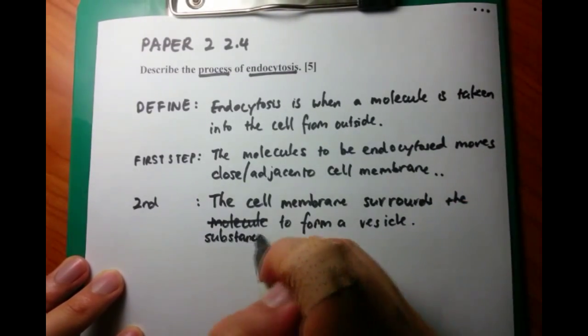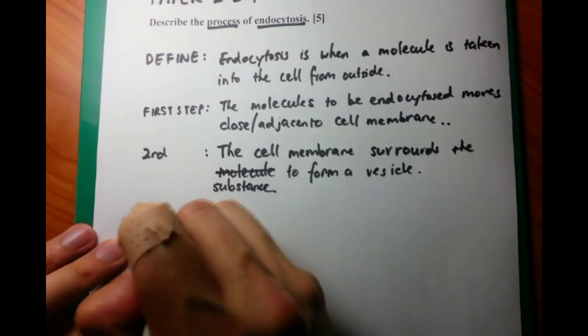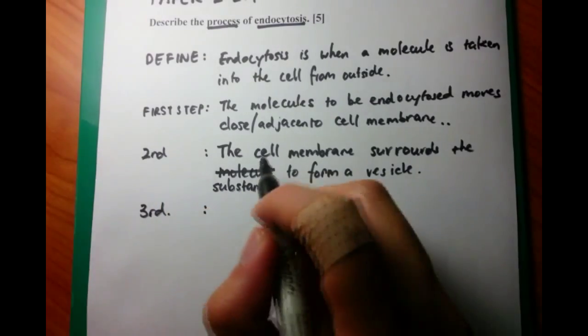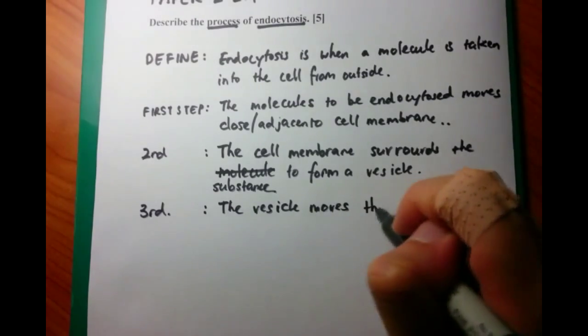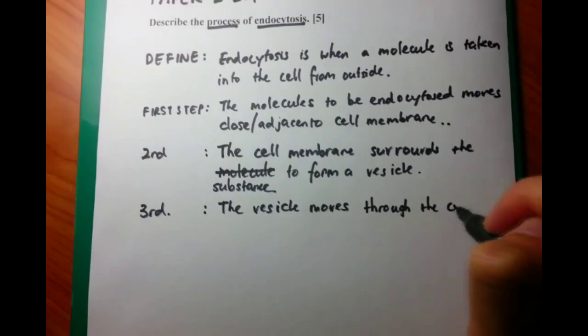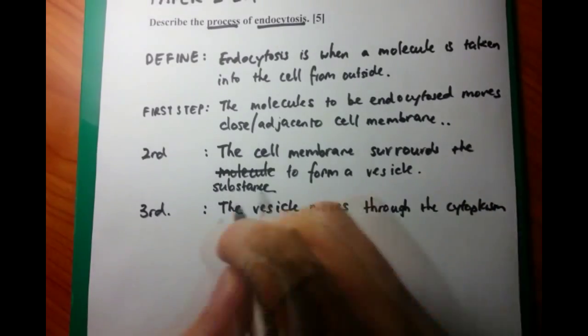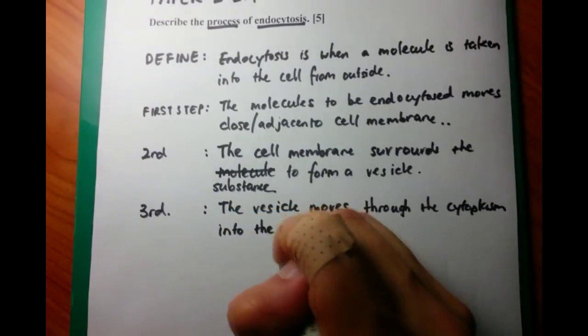Now the third step: What happens after it's been brought inside? The molecule is inside the vesicle and is transported. The vesicle moves through the cytoplasm into the cell, and it can move to an organelle or another structure as required.